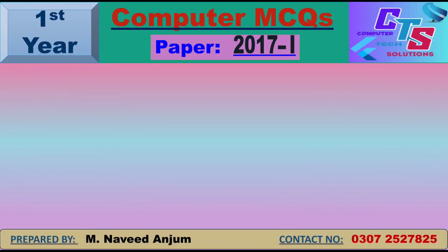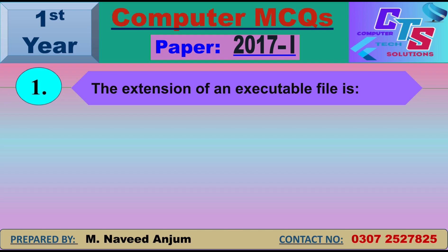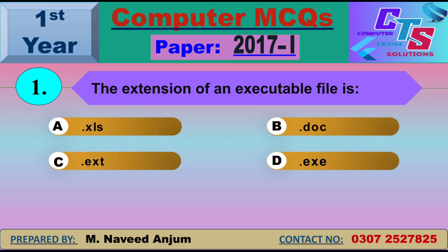Question number 1: The extension of an executable file is? This MCQ is repeated. The executable file has machine code. Option D — .exe — will be the right answer.